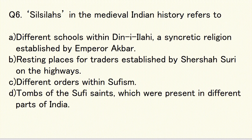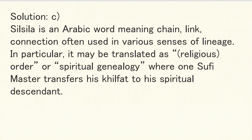Question number 6: Silsilas in medieval Indian history refers to — different schools with Din-e-Ilahi, a syncretic religion established by Emperor Akbar; resting places for traders established by Sher Shah Suri on the highways; different orders within Sufism; or tombs of Sufi saints. The correct answer is C — silsila refers to different orders within Sufism. Silsila is an Arabic word meaning chain, link, or connection, often used in the sense of lineage. It is translated as a religious order or spiritual genealogy, where one Sufi master transfers his Khilafat to his spiritual descendant.